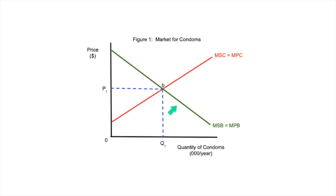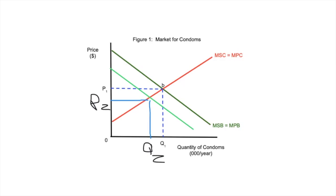So, because of consumption, something is going to happen here. When a couple uses a condom, the total benefit of the use of that condom actually extends beyond that particular couple. As a result, you have a situation where the private benefit of a condom is actually less than what it could be. That gives us a new price-quantity combination — P2, Q2.